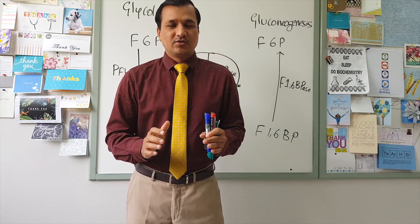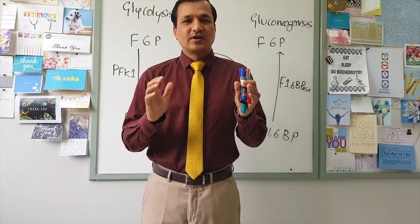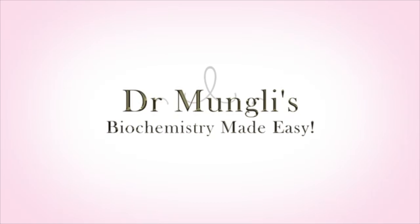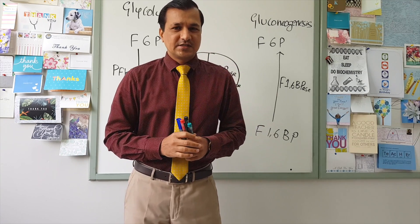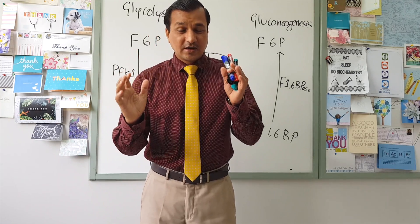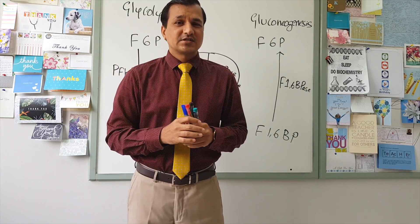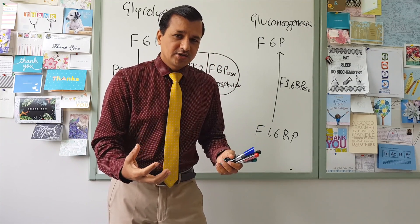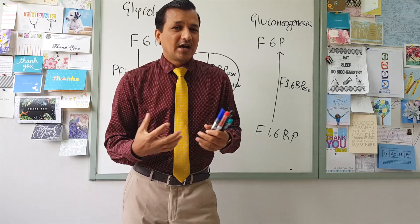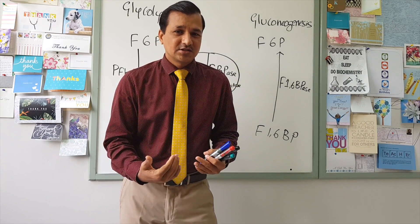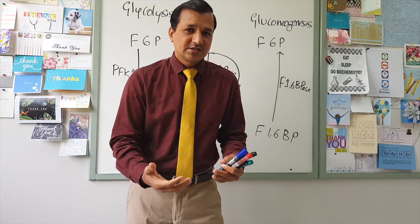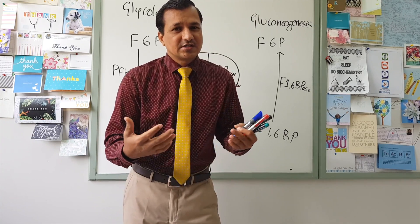In this video, I will be explaining about the regulation of glycolysis and gluconeogenesis simultaneously. Glycolysis and gluconeogenesis are opposing pathways — glycolysis is the breakdown of glucose and gluconeogenesis is the making of glucose. So when glycolysis is going on, gluconeogenesis has to be halted, and when gluconeogenesis is going on, glycolysis has to be halted.